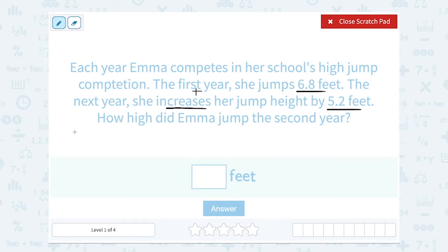So to figure out her height on the second year, we're going to say 6.8, her first year height, plus 5.2, the amount she increased it by. Now notice when I'm adding these together, I'm lining up the decimal points because I need to make sure that I'm adding numbers that are in the same place value. I'm also going to line up the decimal point in my answer.